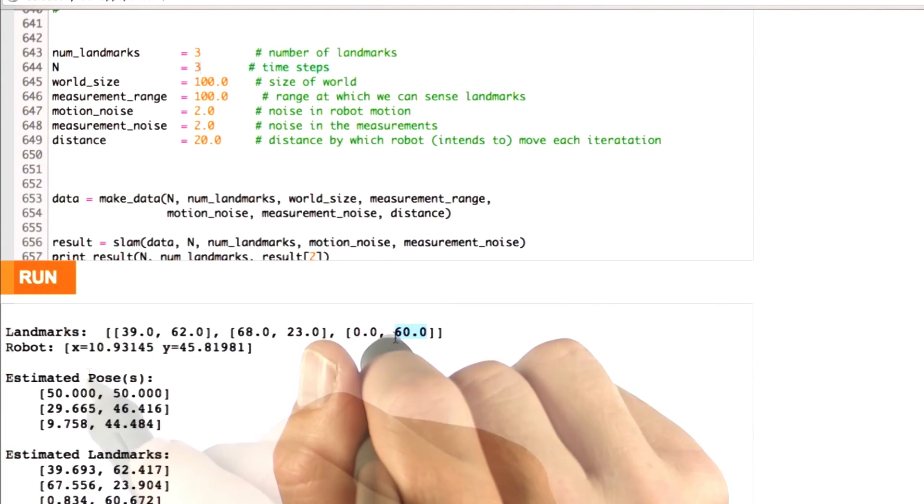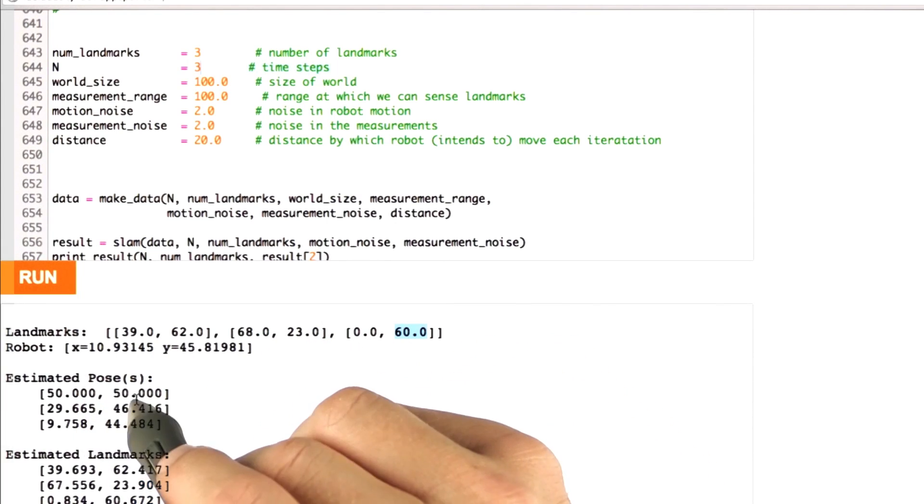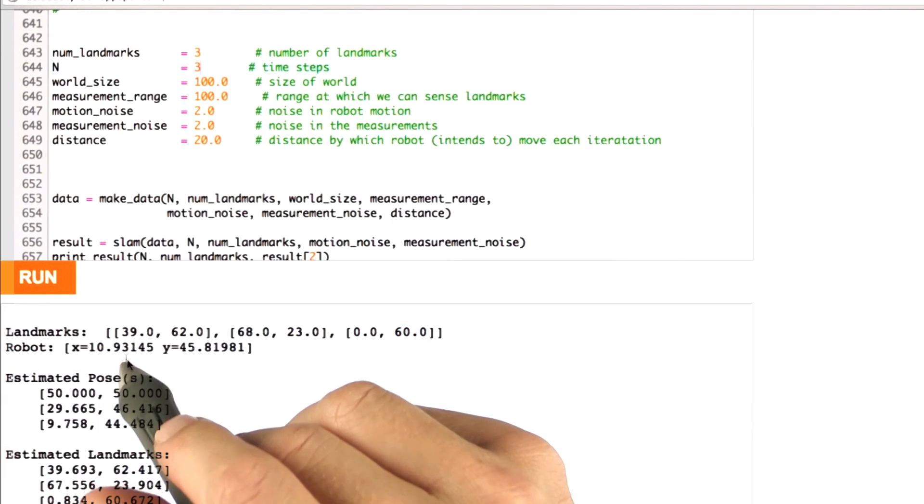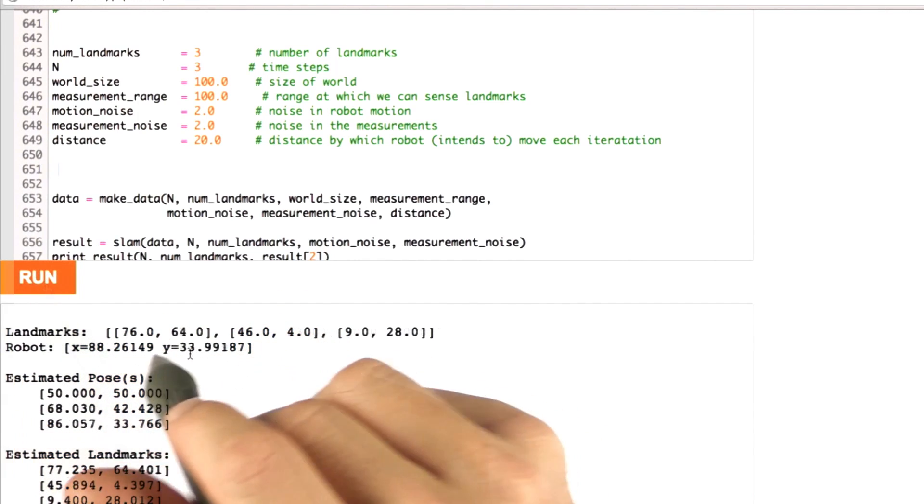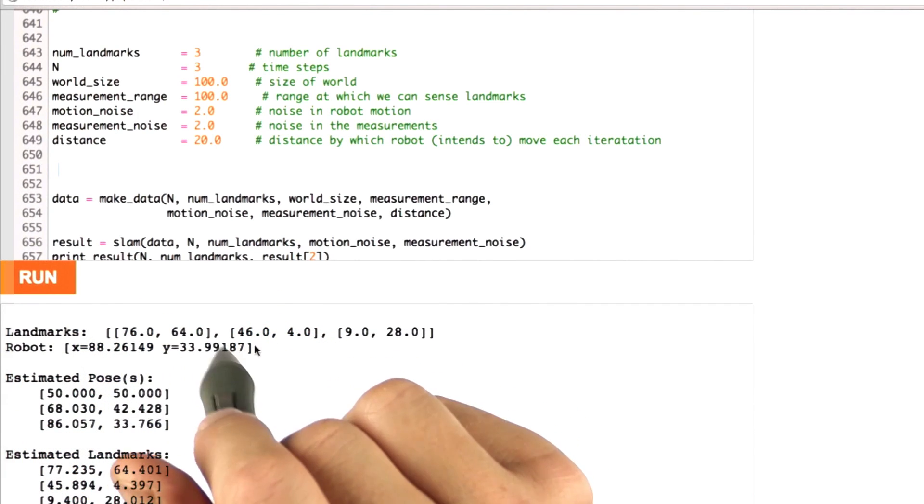Then what I might get out looks as follows. There's three landmarks. There's a sequence of estimated positions leading up to the actual robot position. They're about correct. And then there's estimates for where the landmarks are. Every time I run it, I get a different answer because my landmarks and my world is different at every time.